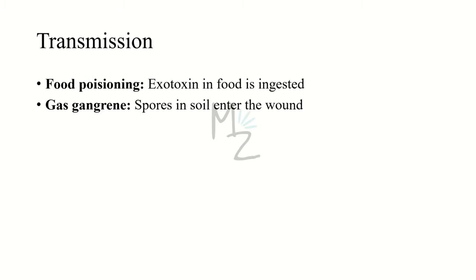Transmission. For food poisoning, exotoxin in food is ingested, or the bacteria itself is ingested in large amounts by humans or animals, causing food poisoning. For gas gangrene, spores in soil enter wounds — such as war wounds, wounds caused by automobile or motorcycle accidents, or septic abortions.